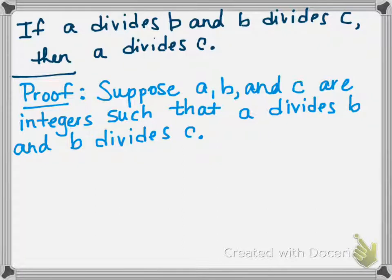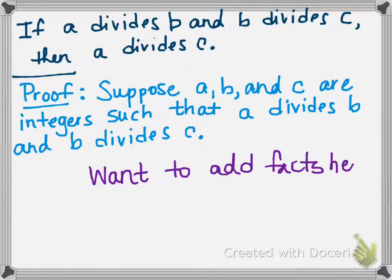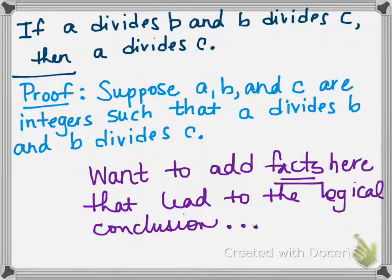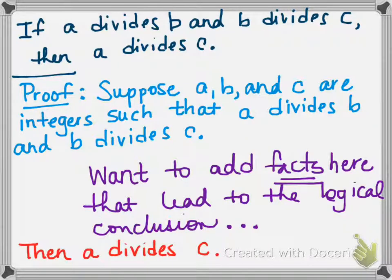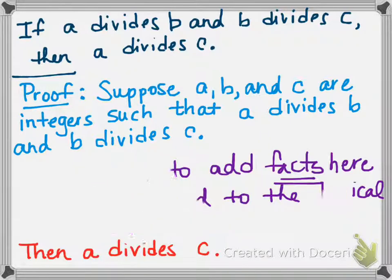And of course, to be able to actually use that definition of divides, I need A, B, and C to be integers. And so what I want to do now is I want to fill up the rest of my proof with facts and definitions, things that we know to be true. So that I can then get to the logical conclusion that A divides C. So the in-between are just facts and conclusions that I can use. So that's what I want there. So let's try to fill that in.